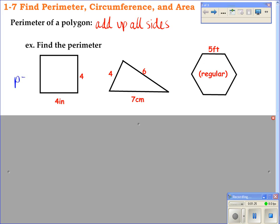16, yes. So perimeter equals 16. What would the units be? Okay. What about on the triangle?